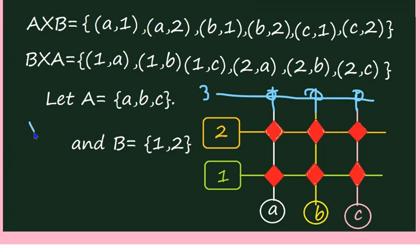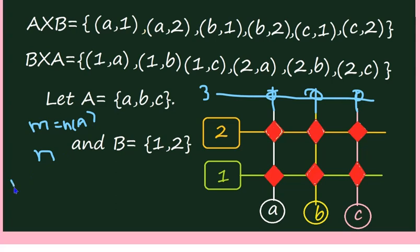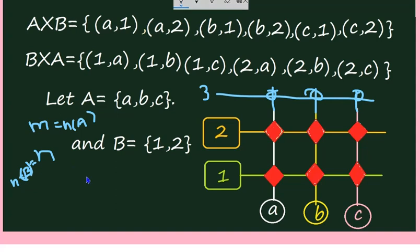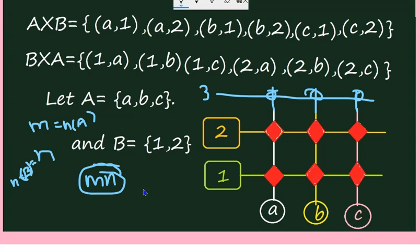In general, if A has M elements and B has N elements — that is, n(A) = M and n(B) = N — then A cross B will have MN elements. You can observe that both A cross B and B cross A have the same number of elements MN, because multiplication is commutative: MN = NM. But the elements themselves are different — the number of elements will be the same, but they need not be the same elements.